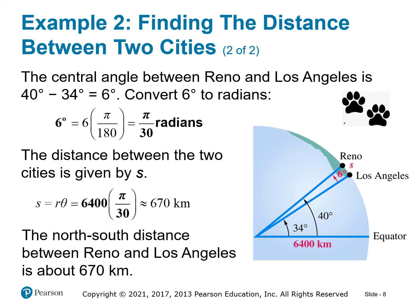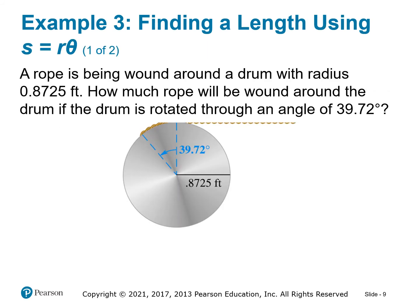That's an interesting way of finding distance between places on the same north-south line. Next problem: a rope is being wound around a drum with radius 0.8725 feet. How much rope will be wound around the drum if the drum is rotated through an angle of 39.72 degrees? Rotating the drum is simply an arc length problem.